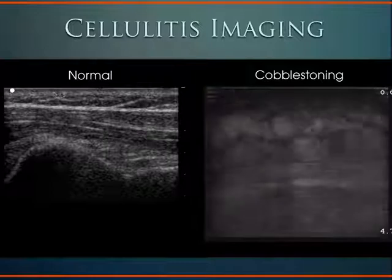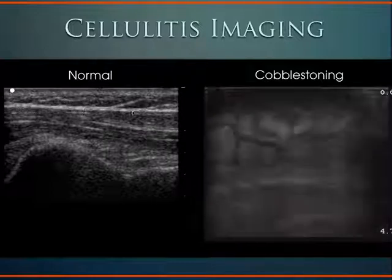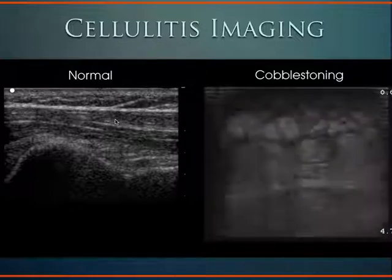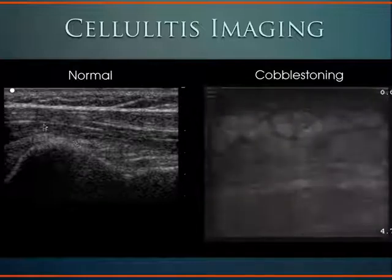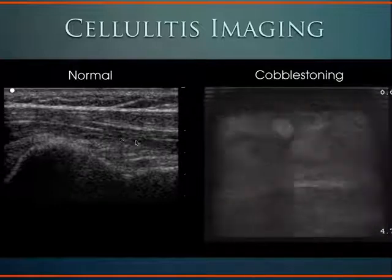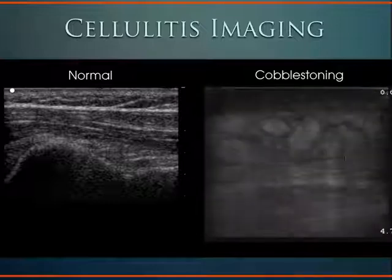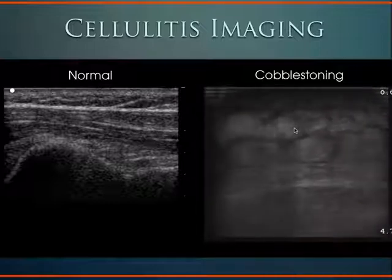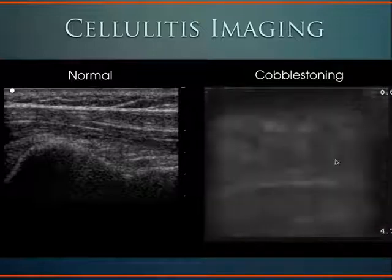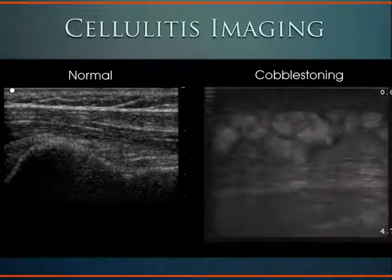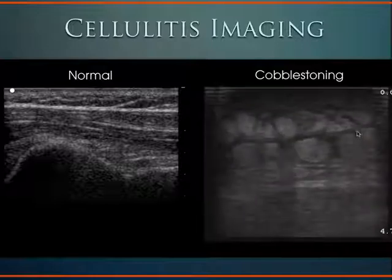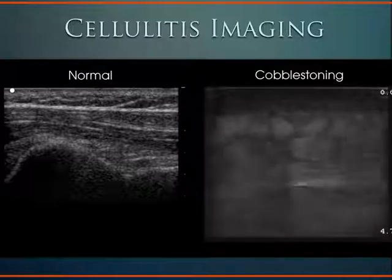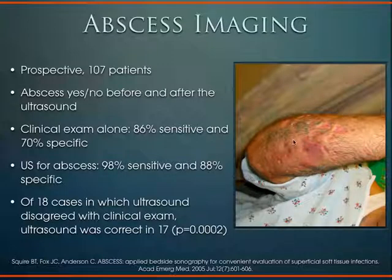Normal soft tissue looks like this — we see the skin line, subcutaneous fat, a fascial plane, more soft tissue, bony structure, and a tendon. With cellulitis, we see cobblestoning: hyperechoic regions in the subcutaneous soft tissue with some anechoic edema outlining the different cobblestones. Notice there's no abscess here.